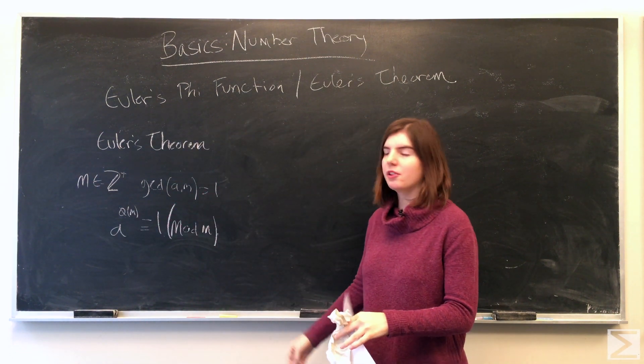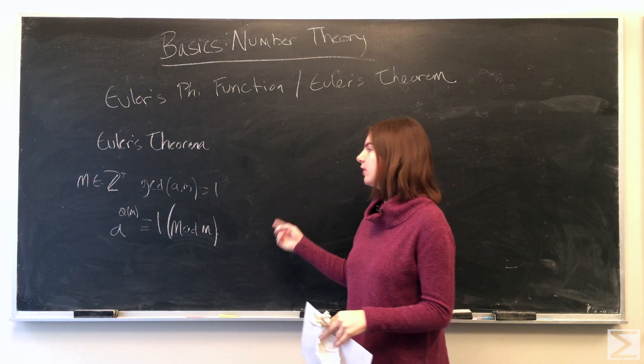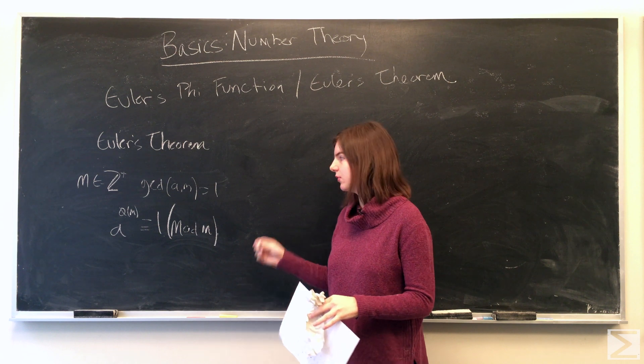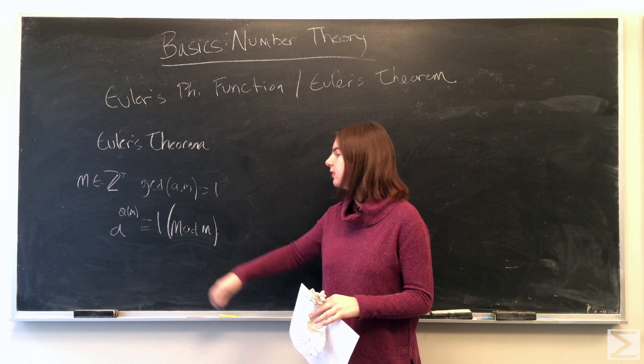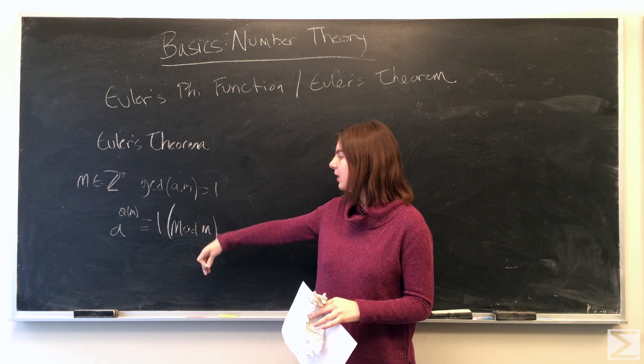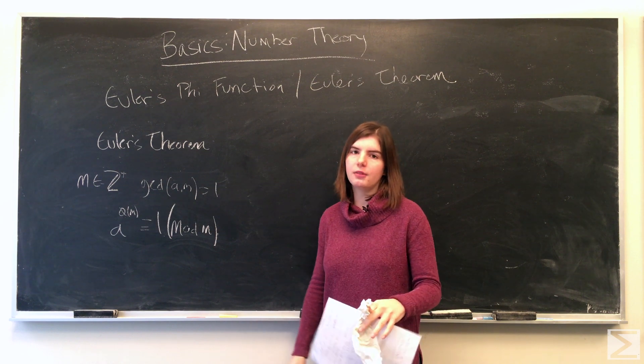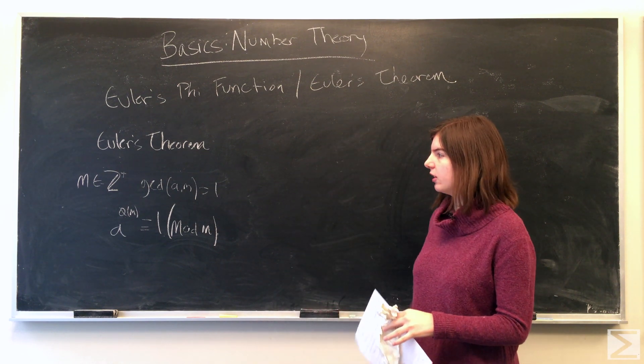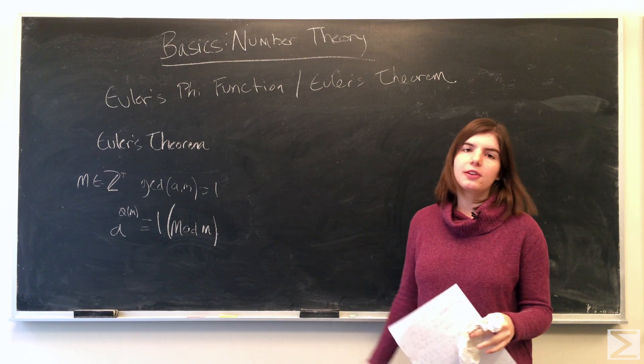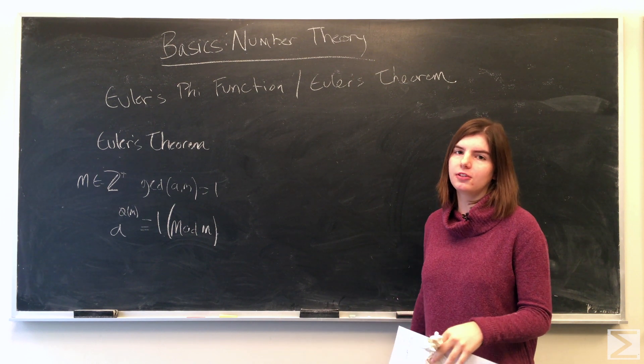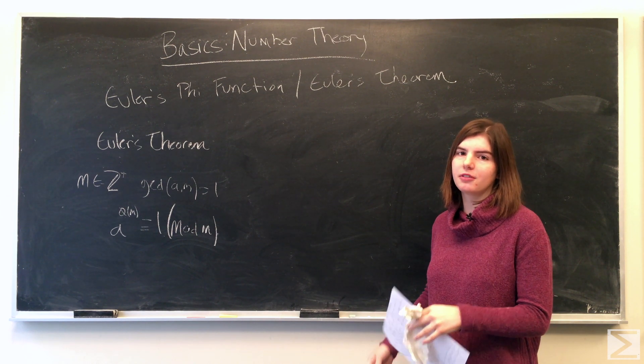So Euler's theorem says that if m is a positive integer and the greatest common divisor of a and m is equal to 1, which means they're co-prime, then a to the phi of m is congruent to 1 modulo m. We'll go through some examples. You can use Euler's theorem, like Fermat's little theorem, to solve linear congruences or find the inverse or find the least positive residue.